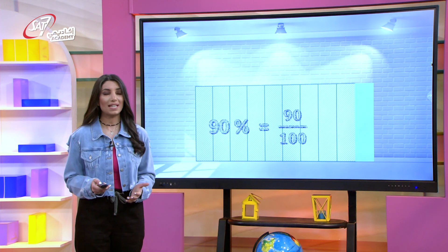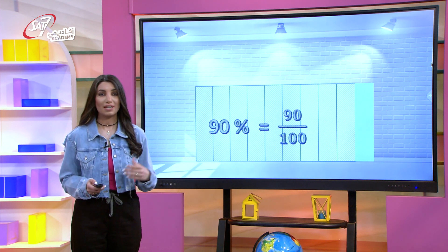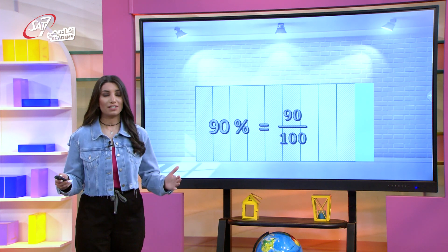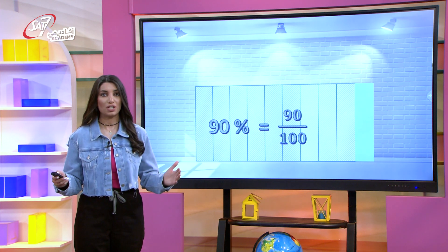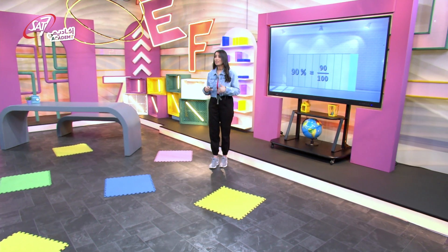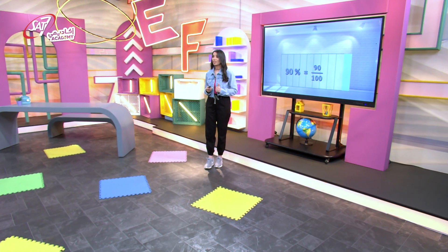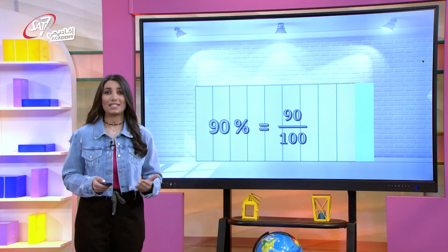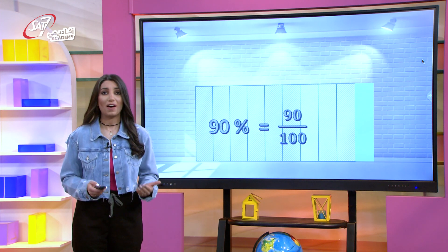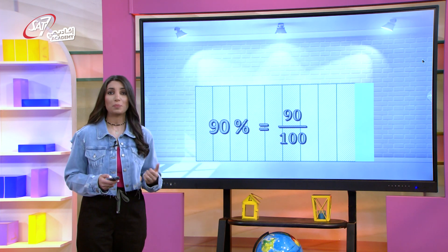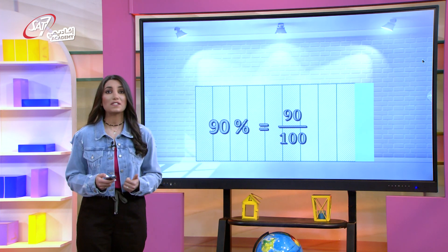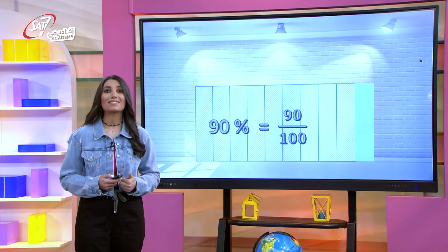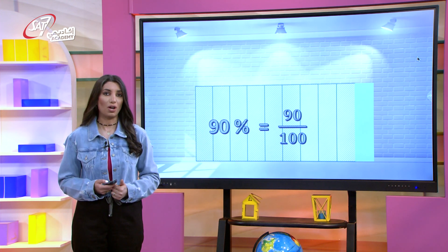90% is a fraction — 90 out of 100. Any percentage is a fraction with 100 as the denominator. The denominator is the number below the line. So 5% means 5 out of 100, 50% means 50 out of 100, 70% means 70 out of 100, and so on.